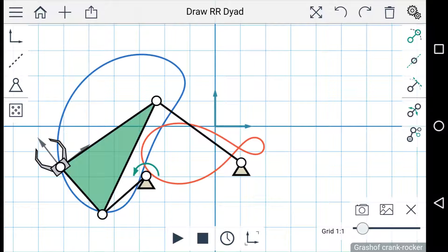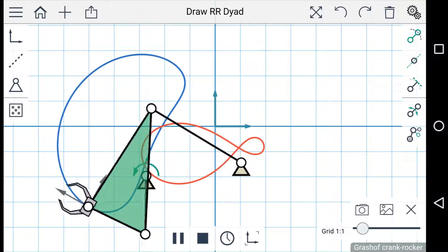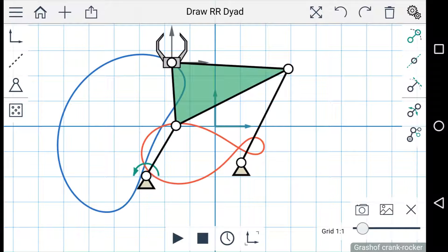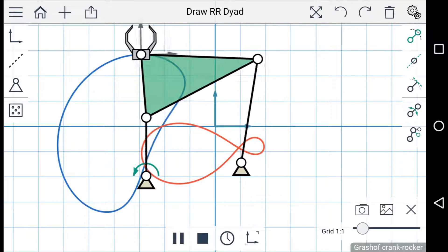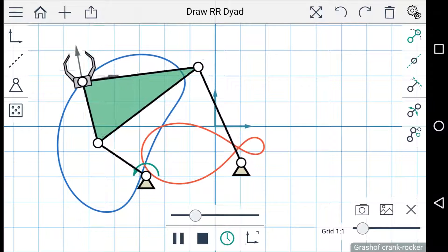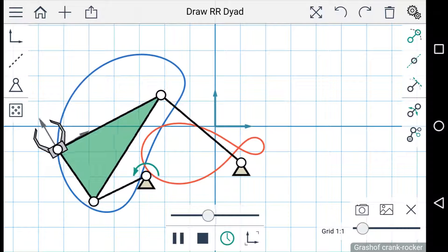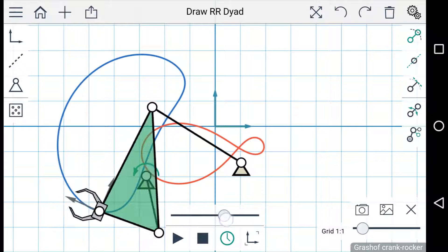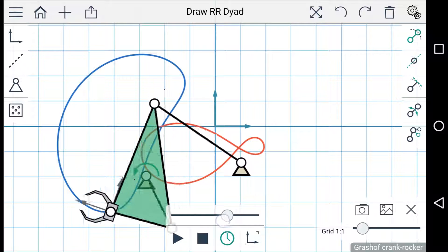You can pause and continue playing the animation, or you can press stop to reset the linkage to its original position. You can view the timeline of the animation, and you can drag the slider back and forth to set the position of the linkage.